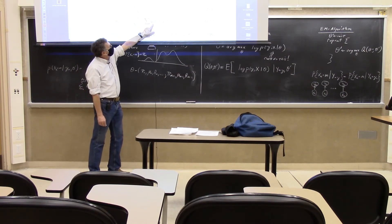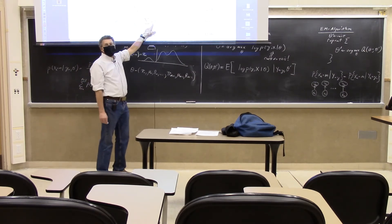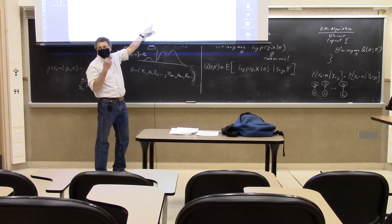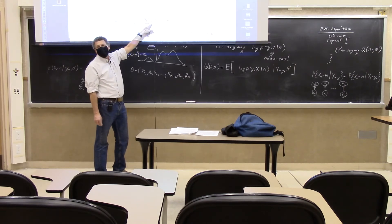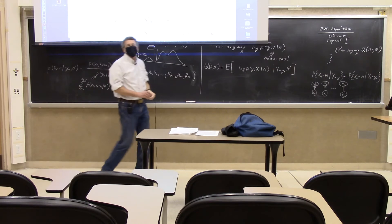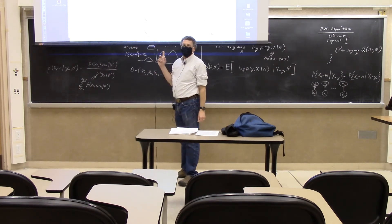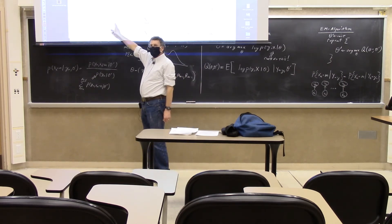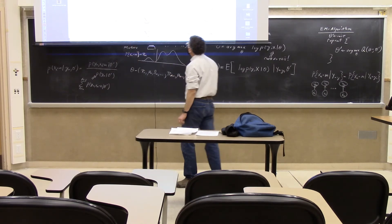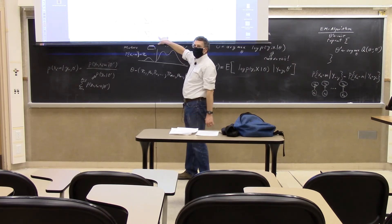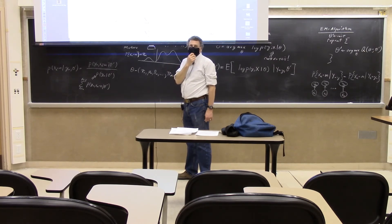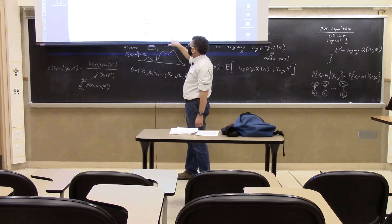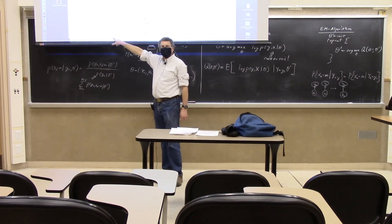If you sum the array over M, you get N — the total number of samples. If you use the P(n,m) values as weights to sum the actual Y's and divide by N_M, you get a weighted average: the mean for each class, where the weight is proportional to the probability that Y came from class M. From there you can compute the variance for each class.